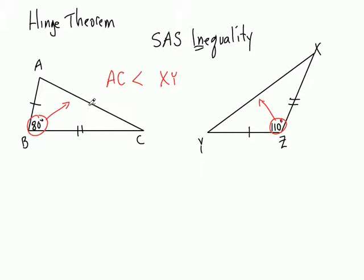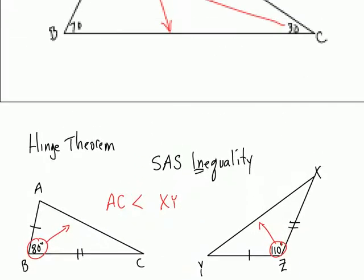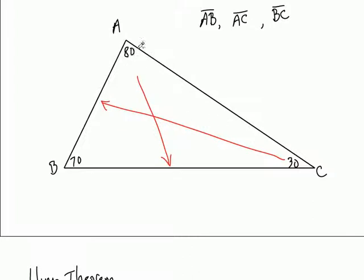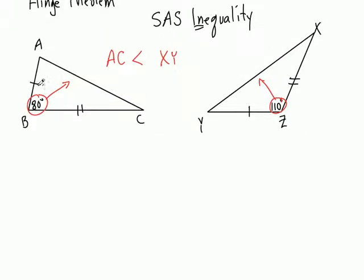This side has got to be smaller than this side because it's opposite the smaller angle. Now, this is two different triangles — inequalities in two triangles, not one. You have to have these two sides equal to these two sides for this to work. You can't just have any angle 80 and any angle 110 — the sides have to be equal. So look opposite the smaller angle and opposite the bigger angle, and that tells you which side is bigger.